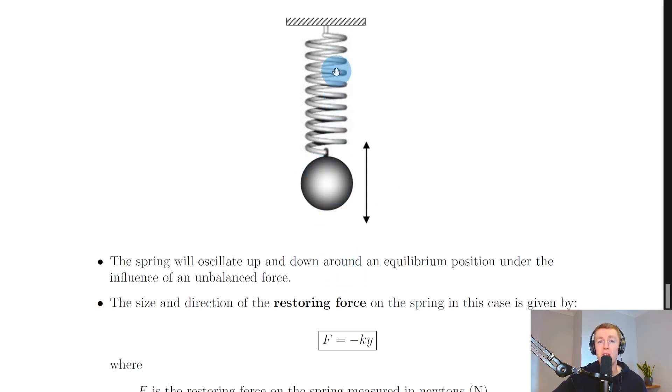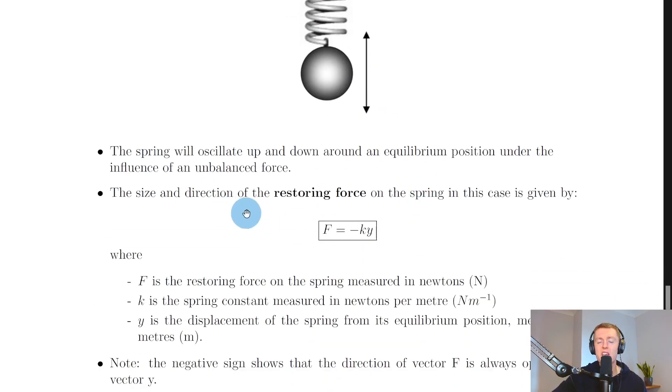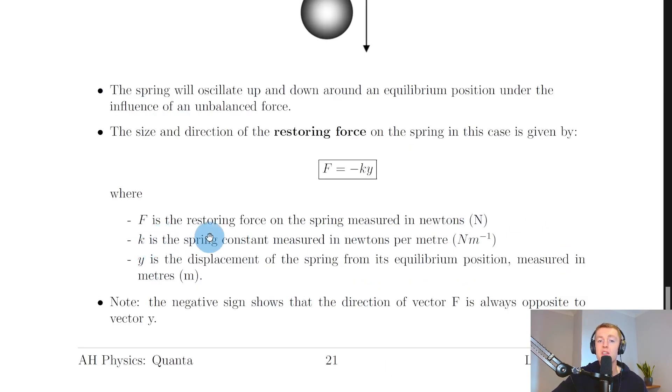That's because the spring will stretch and compress. The size and direction of the restoring force on the spring in this case is given by F equals minus ky, where F is the restoring force on the spring measured in newtons, k is the spring constant measured in newtons per meter, and y is the displacement of the spring from its equilibrium position measured in meters.